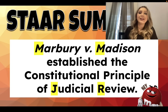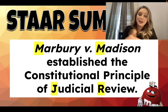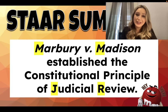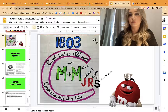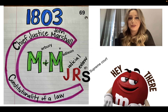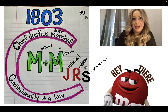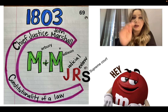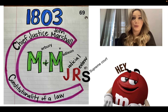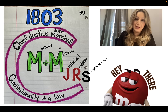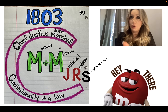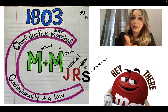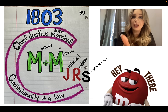Here is our summary for this lesson. Because of Marbury v. Madison, it established the constitutional principle of judicial review. It happened in 1803. On the back of your notes, page 69, I want you to draw a giant C. The C represents two things: Chief Justice John Marshall, who established this principle, and the constitutionality of a law - is the law constitutional or unconstitutional?